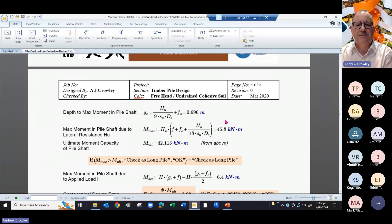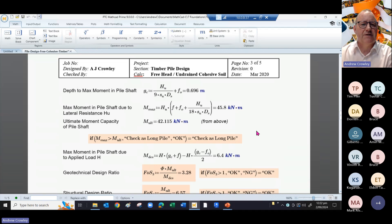The maximum moment in the pile shaft due to that horizontal resistance is 45 kilonewton meters.